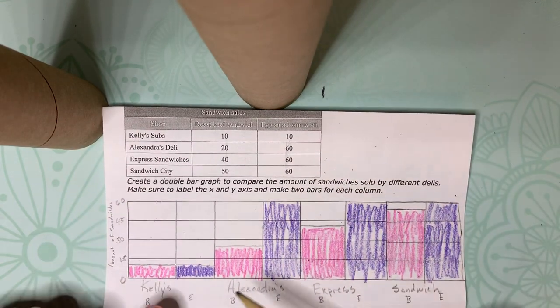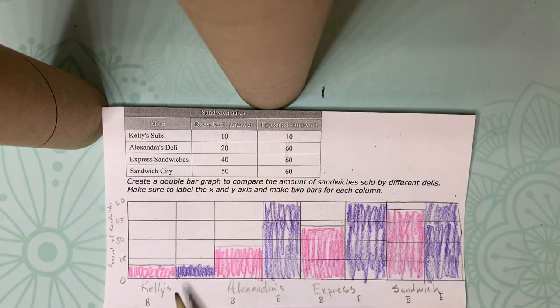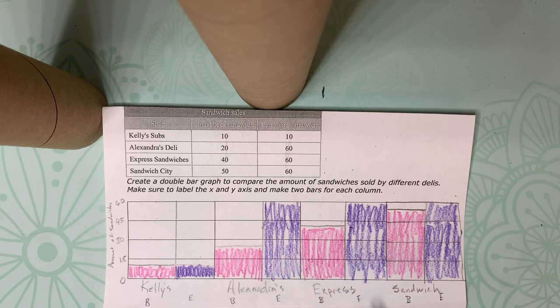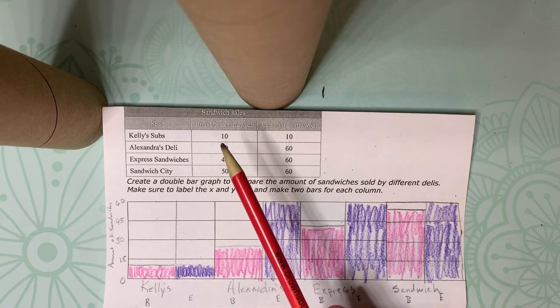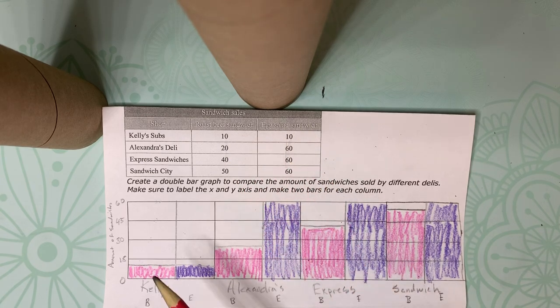So I took my x-axis, remember x is flat, and then I labeled it with the different sub-shops, but I also labeled the B and the E, one for the roast beef sandwich and the egg salad sandwich.